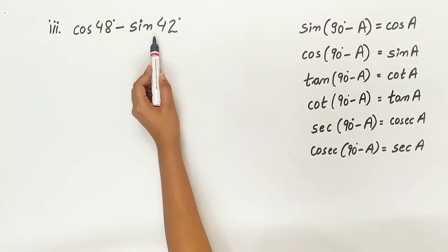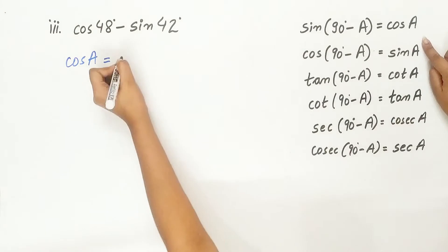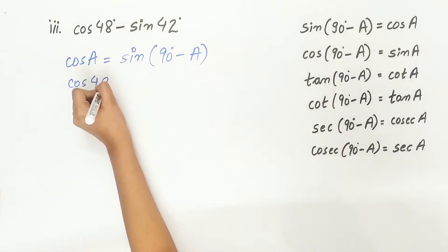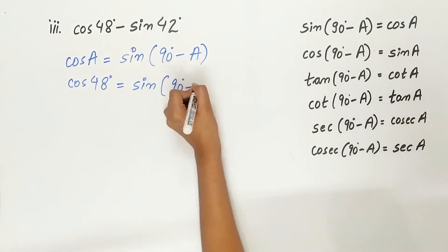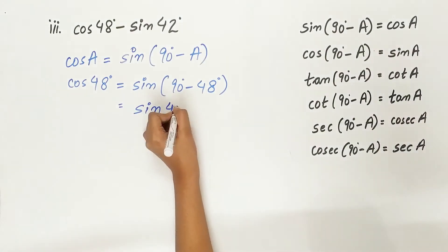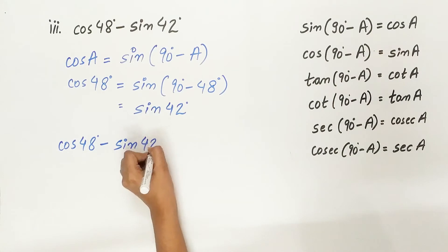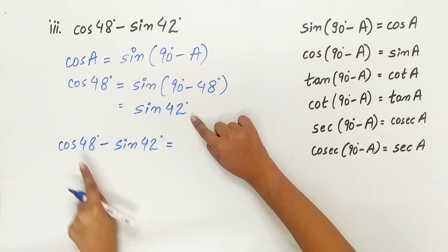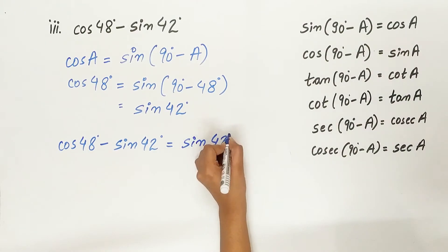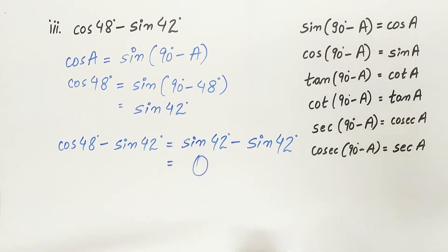Third part is cos 48 degree minus sin 42 degree. Cos A is equal to sin 90 degree minus A. A is 48 degree, so cos 48 degree equals sin 90 degree minus 48 degree, which is sin 42 degree. Substituting, sin 42 degree minus sin 42 degree equals 0.